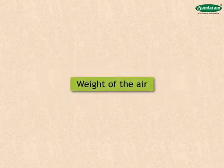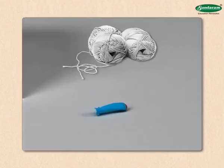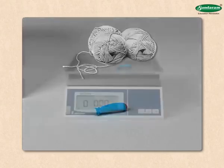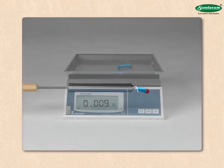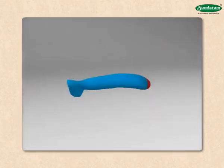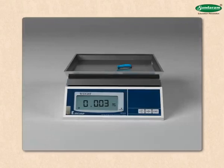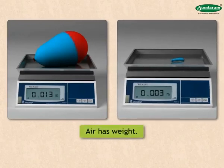Weight of air. Let us conduct an experiment to find out if air has weight. Take a big balloon as shown in the figure, fill it with air and tie its mouth tightly with a string. Weigh this balloon and make a note of the weight. Now remove the air from the balloon and weigh the empty balloon with a tied string. You will notice that the balloon filled with air weighs more than the empty balloon. This proves that air has weight.